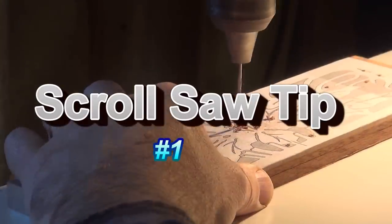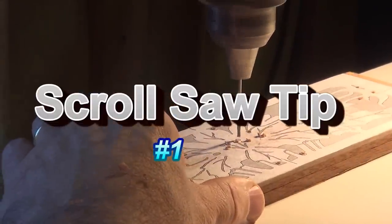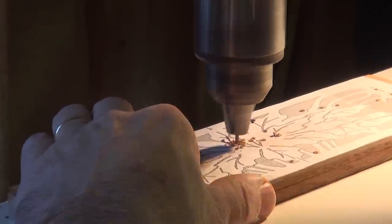Here is scroll saw tip number one. Do not nail your parts together. It only takes one nail popping through to wreck your scroll saw table.